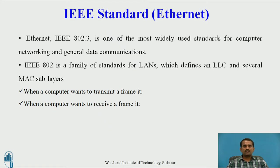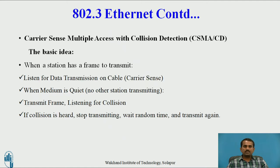If the current station has frames it wants to transfer to another station, it must follow a defined process. When a computer wants to transmit a frame, and when a computer wants to receive data from the next or previous station, the steps are defined in the next slide. That is Carrier Sense Multiple Access with Collision Detection — CSMA/CD. The basic idea: when a station has a frame to transmit, it listens for transmission on the cable — that is carrier sense. When the medium is quiet, another station transmits the frame, listening for collision. If a collision occurs, stop transmitting, wait a random amount of time, and then transmit again.